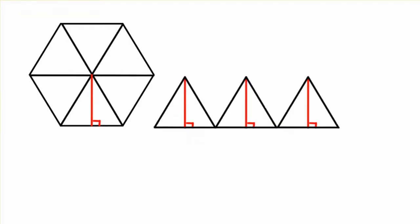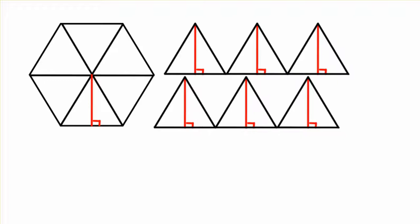There's the height of one of the triangles, and there's all six of our triangles. Now, notice that the bases of all of these triangles, they're going to be the same as all these different sides all the way around our regular polygon. It's all going to be the same length.